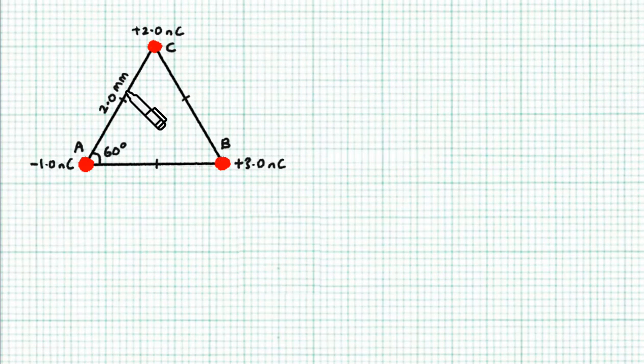So here we have an example. We have three charges, A, B and C. They're positioned at the three corners of an equilateral triangle with length 2.0 mm.